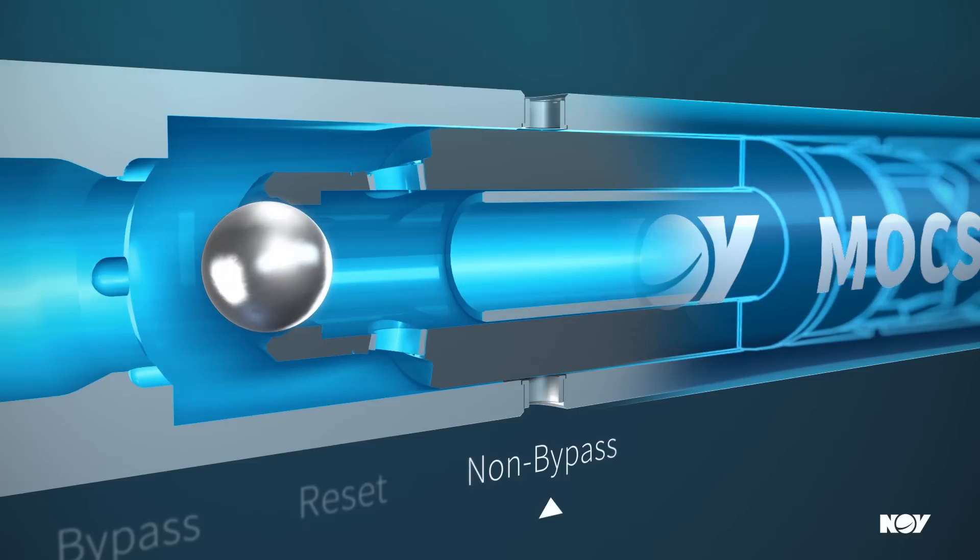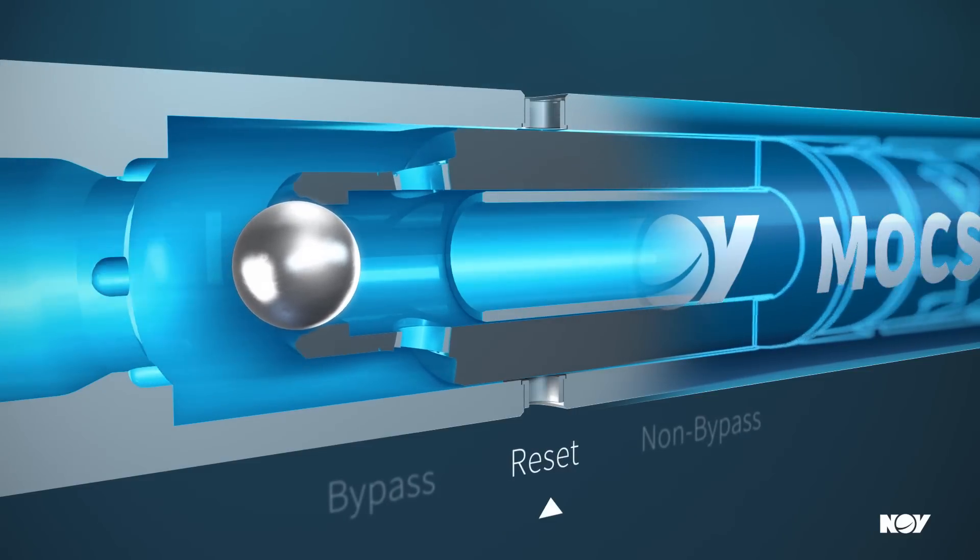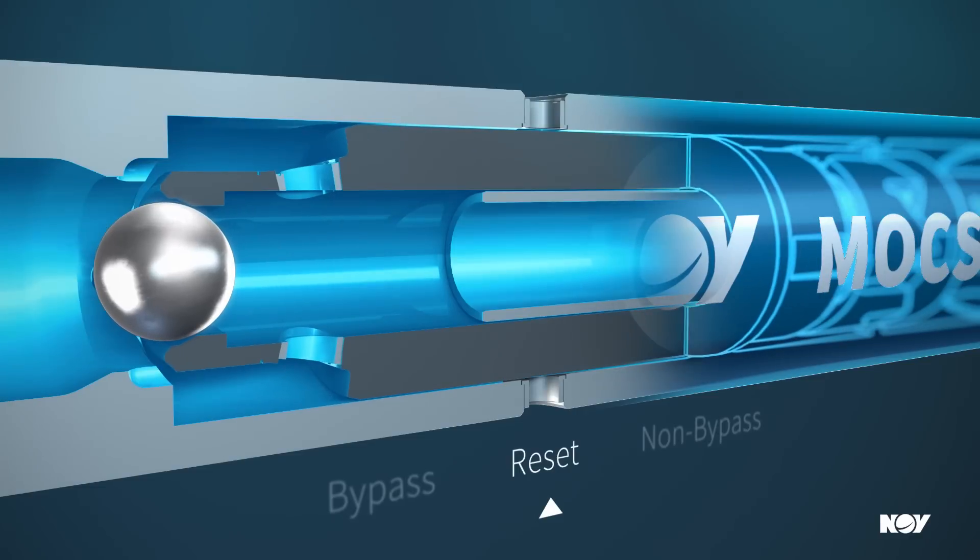Once activated, you can cycle between bypass and non-bypass modes in as little as 10 seconds just by changing your flow rate.